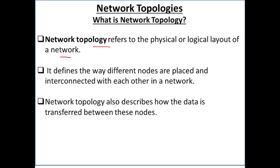Network topology kisi bhi network ke physical or logical layout ko define karta hai. Physical layout ka meaning hai ki network kaisi create kiya jayega? Network ka architecture kya hoga? Architecture ka meaning hai devices ko kaisi ek-dusre se connect kiya jayega? Ek network ke andar devices ko kaha kaha rakha jayega, kaisi place kiya jayega, kaisi unko connect kiya jayega — wired medium se ya wireless medium se?